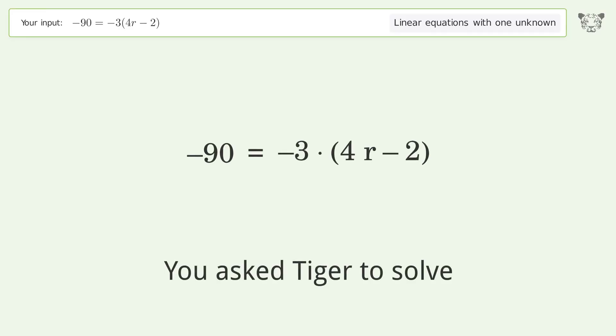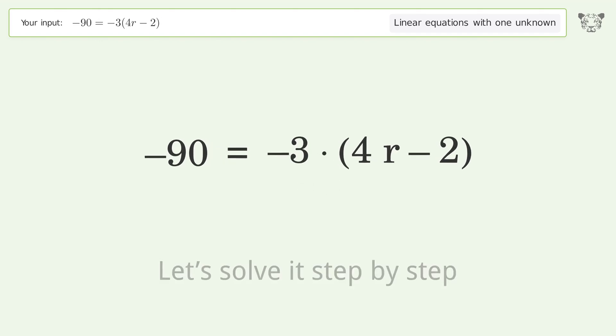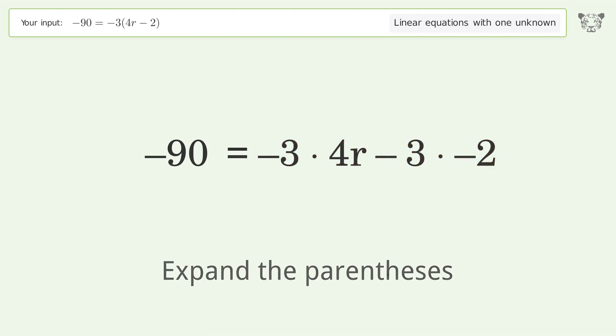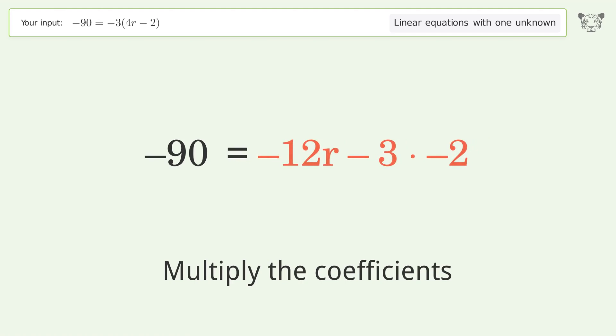You asked Tiger to solve this linear equation with one unknown. The final result is r equals 8. Let's solve it step by step: simplify the expression, expand the parentheses, multiply the coefficients, and simplify the arithmetic.